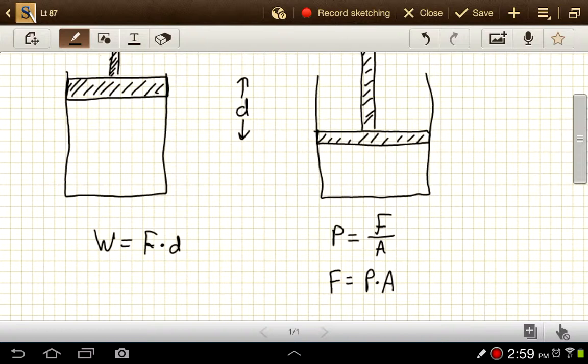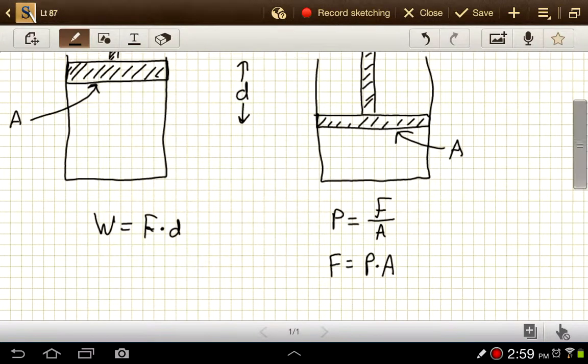The area that we're talking about is the area over which that force is applied. So in the case of a piston here, the piston would have a cross-sectional area of A. And then either the piston is being pushed down with a force F, or the gas is pushing up on the piston with a force F, a net force F.